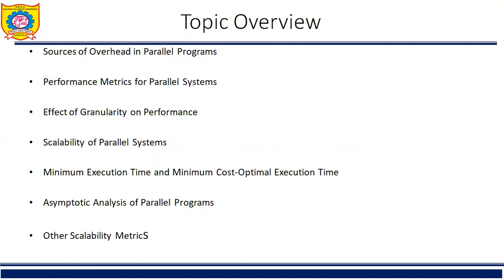Another source of overhead is excess computation. The fastest known sequential algorithm for a problem may be difficult or impossible to parallelize, forcing us to use a parallel algorithm based on a poorer but easily parallelizable approach — one with a higher degree of concurrency. The difference in computation performed by parallel programs and the base serial program is the excess computation overhead incurred by parallel programs. These are the three main sources of overhead in parallel programs.